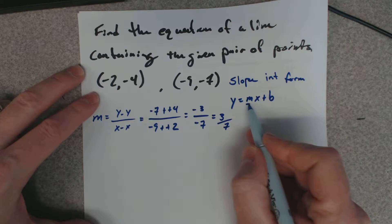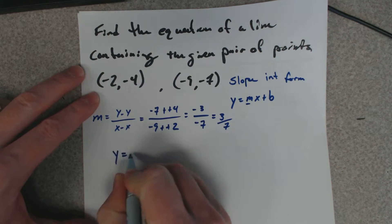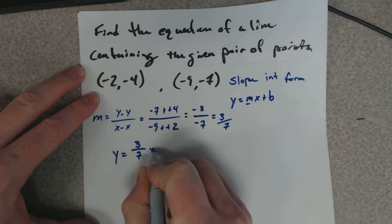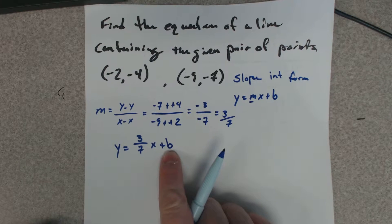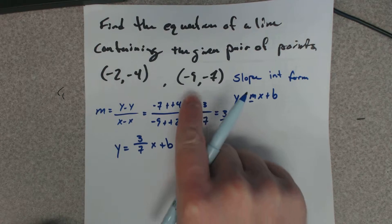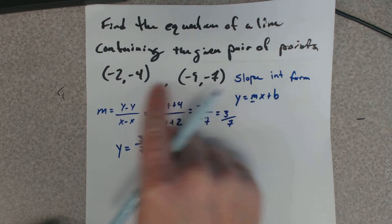So we know this value is 3/7. Here's what we know so far, but I don't know the y-intercept. So to do this, I'm going to pick one of these points.